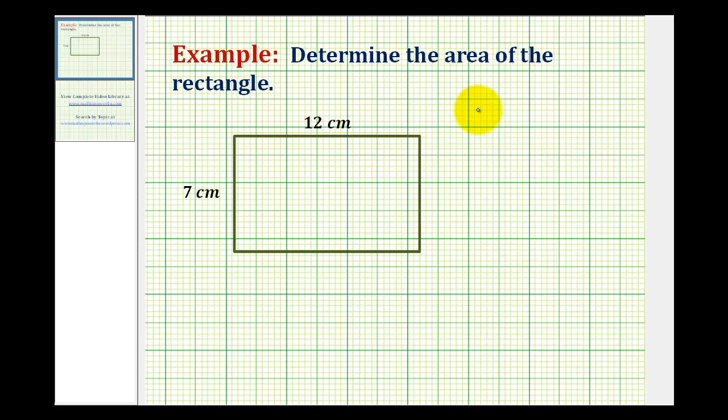The area formula for any rectangle is length times width. But if you forget this formula or you confuse it with perimeter, as long as you understand what area means, we should be able to derive this formula on our own. What I mean by that is if we can't remember the area formula, we should be able to figure it out if we take a look at a smaller rectangle.